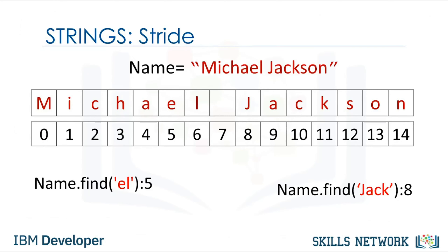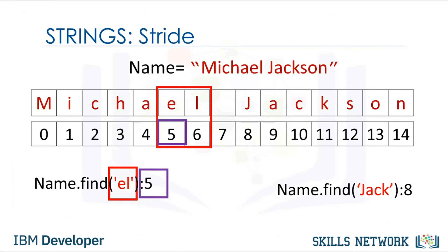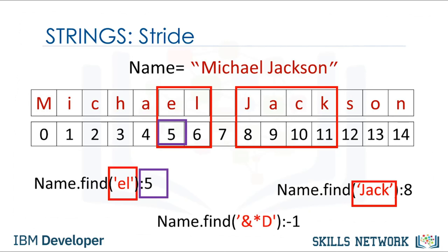The find method finds substrings. The argument is the substring you would like to find. The output is the first index of the sequence. We can find the substring Jack. If the substring is not in the string, the output is negative 1. Check the labs for more examples.